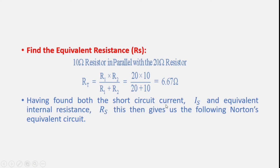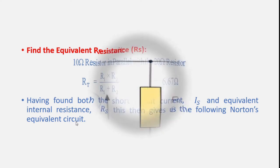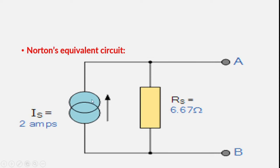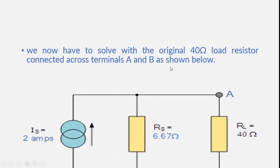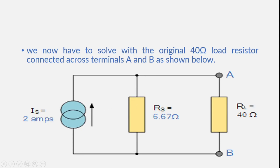Having found both the short circuit current IS and the equivalent internal resistance RS, this gives the Norton's equivalent circuit. Norton's equivalent circuit has IS equals 2 ampere and RS equals 6.67 ohm. We now have to solve with the original 40 ohm load resistor connected across terminals A and B. Using the current division rule, IL equals IS multiplied by RS divided by RS plus RL.